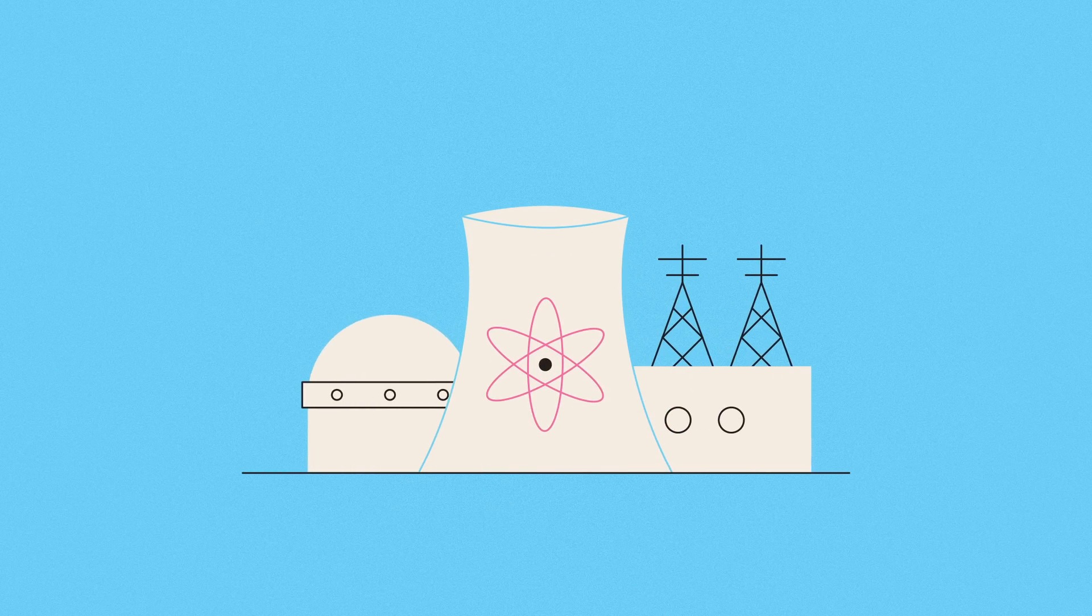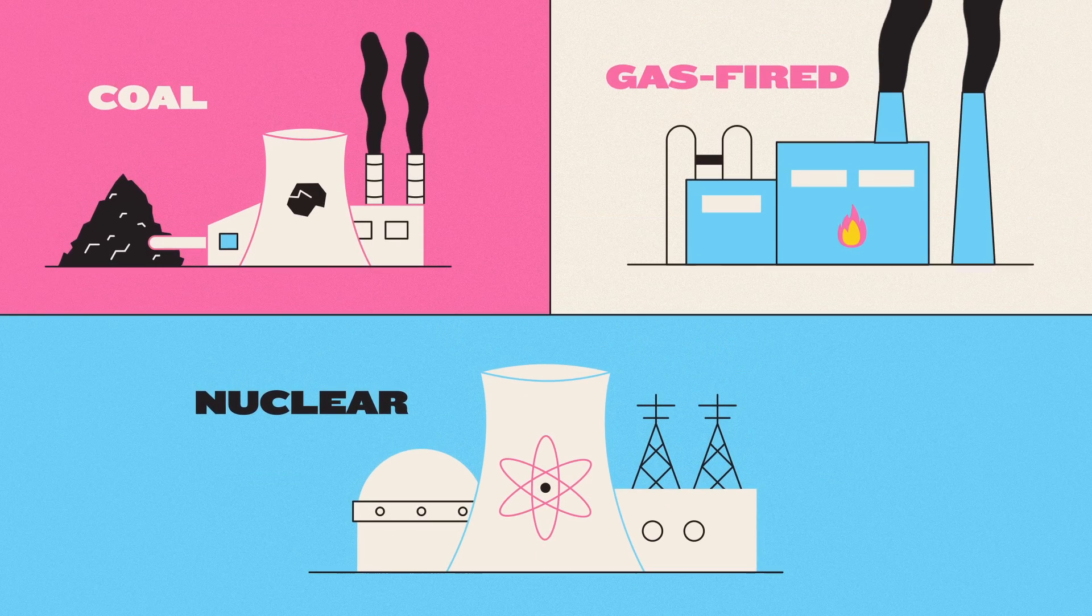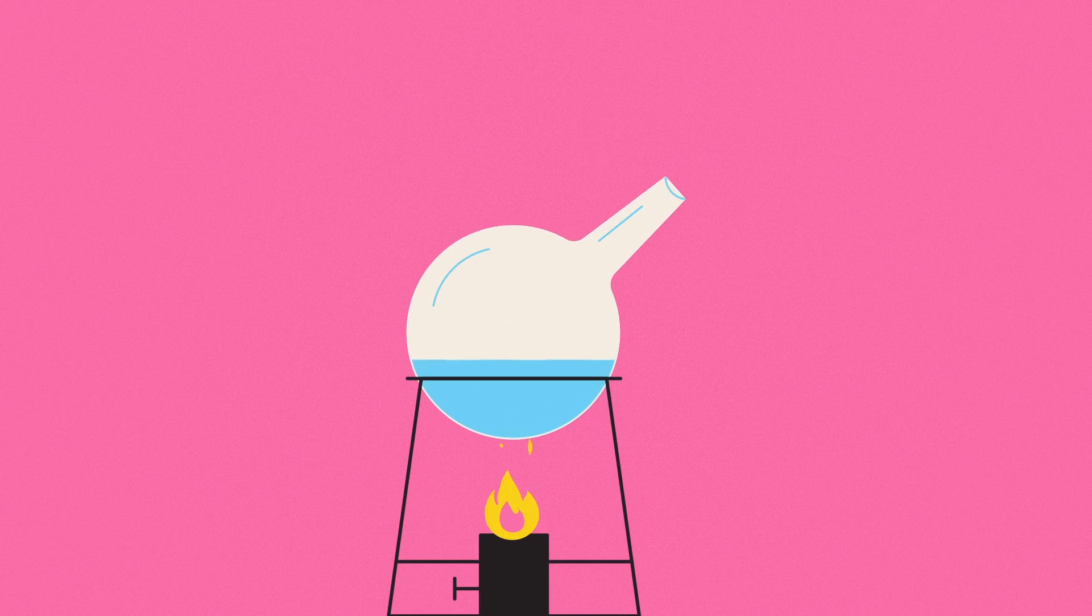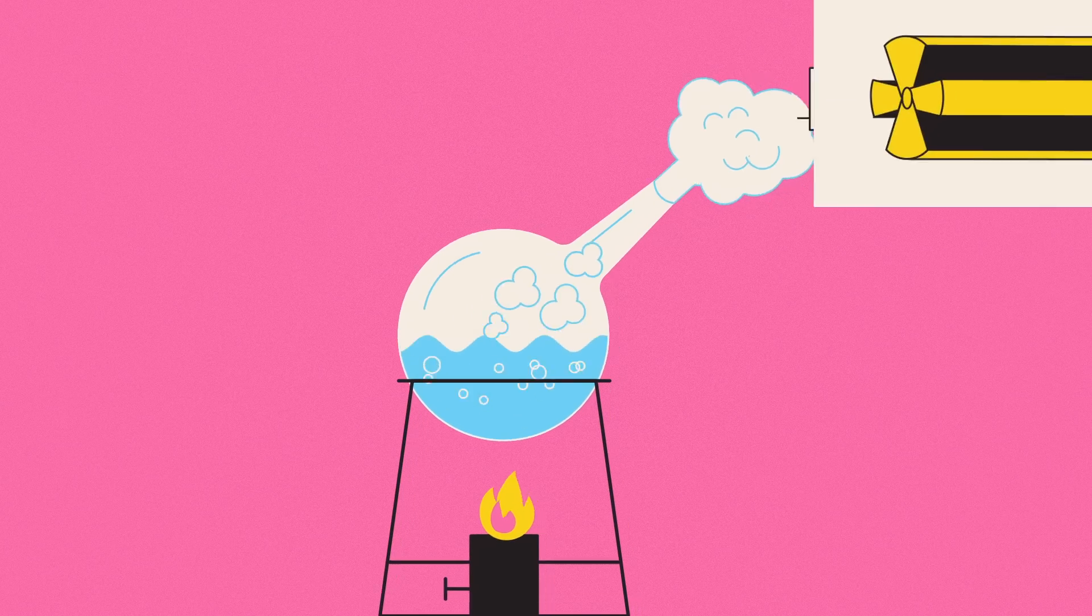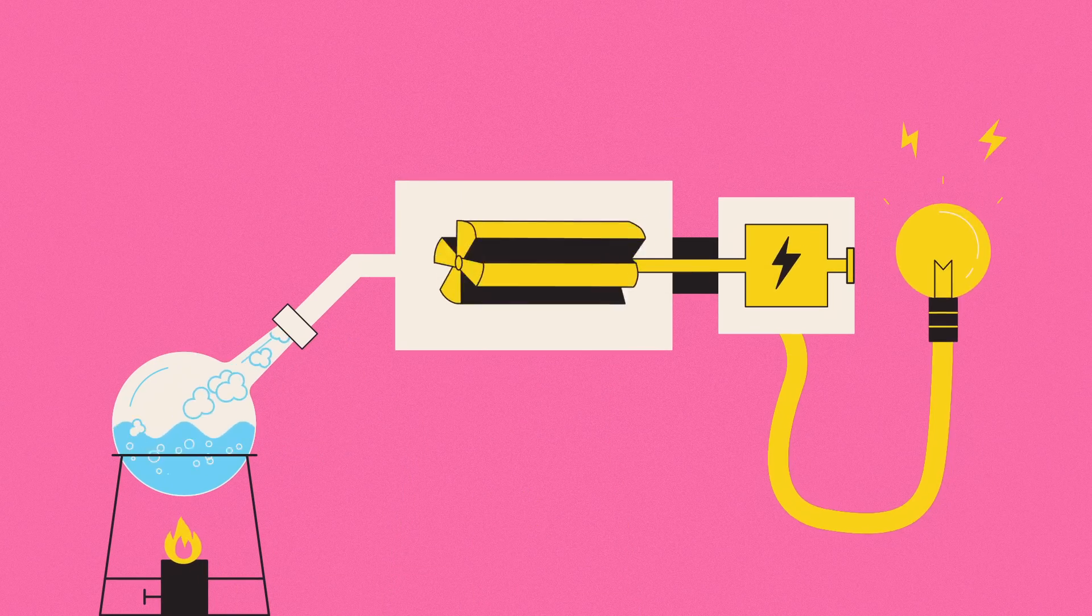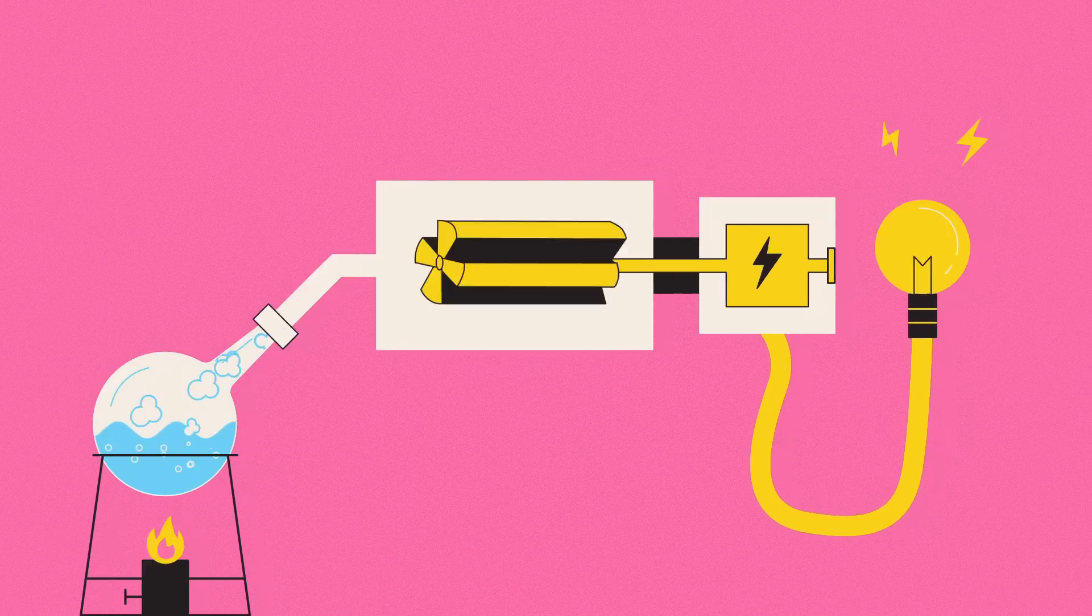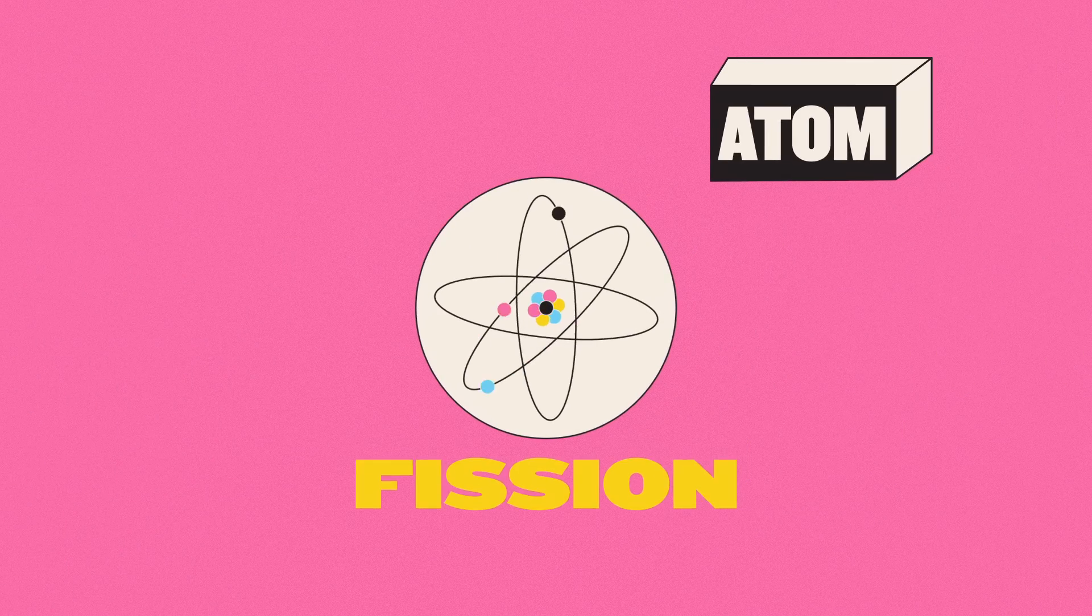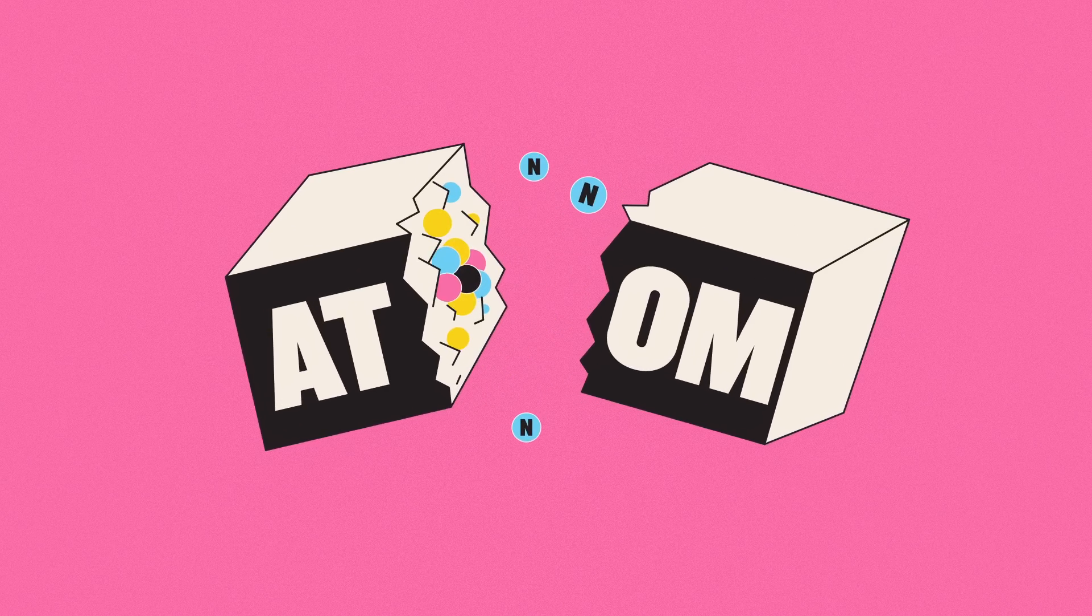In fact, a nuclear power plant works in much the same way as a coal or gas-fired one, by heating water into super-hot steam, which drives turbines rigged up to create an electrical current. The difference is the way heat is created, through a process called fission, meaning the splitting of atoms.